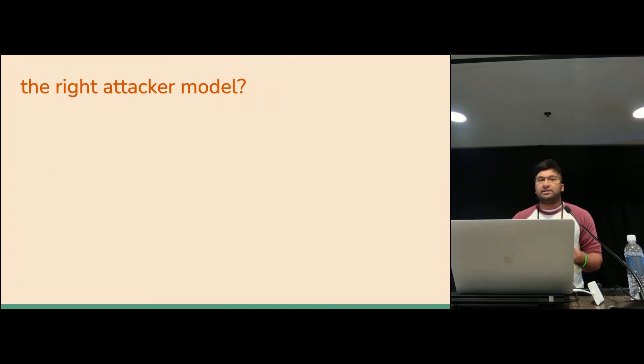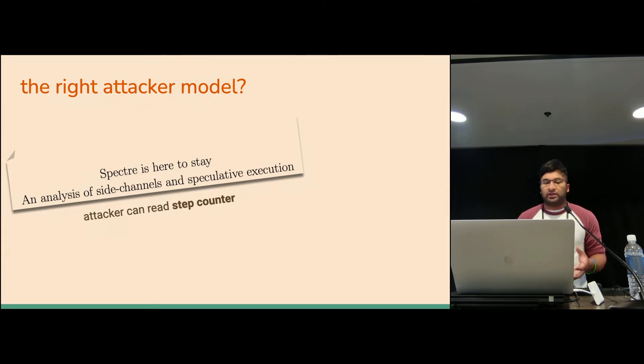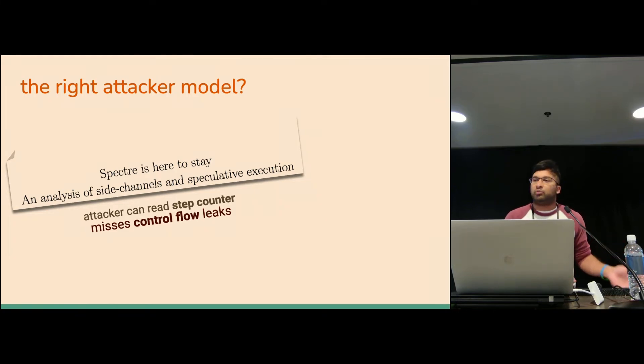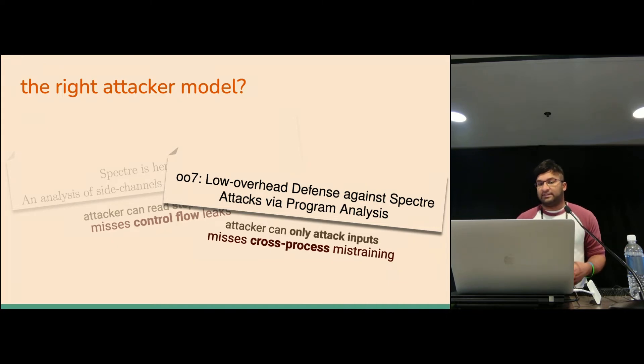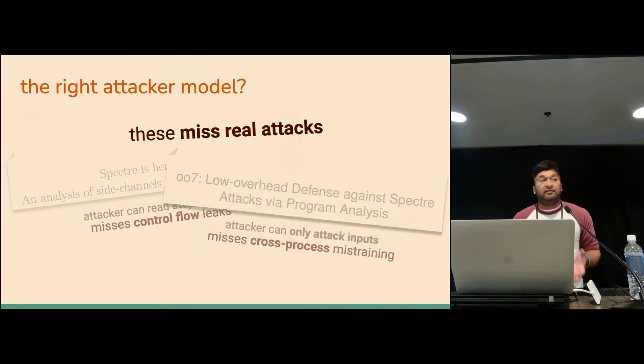Some of the papers that we've looked at, for example, Spectre is Here to Stay was one of the earlier papers where they had a model where the attacker can read a step counter of your program. But that is going to miss a whole bunch of attacks based on control flow that would leak via features like port contention or register pressure. It misses a whole class of leakage. There was also another paper 007 where they find Spectre attacks based on what the attacker can influence. But that leaves out any attacks that happen through cross-process mistraining. And these are real attacks that have been demonstrated. So it's clear that we do need to be able to capture these sorts of things.